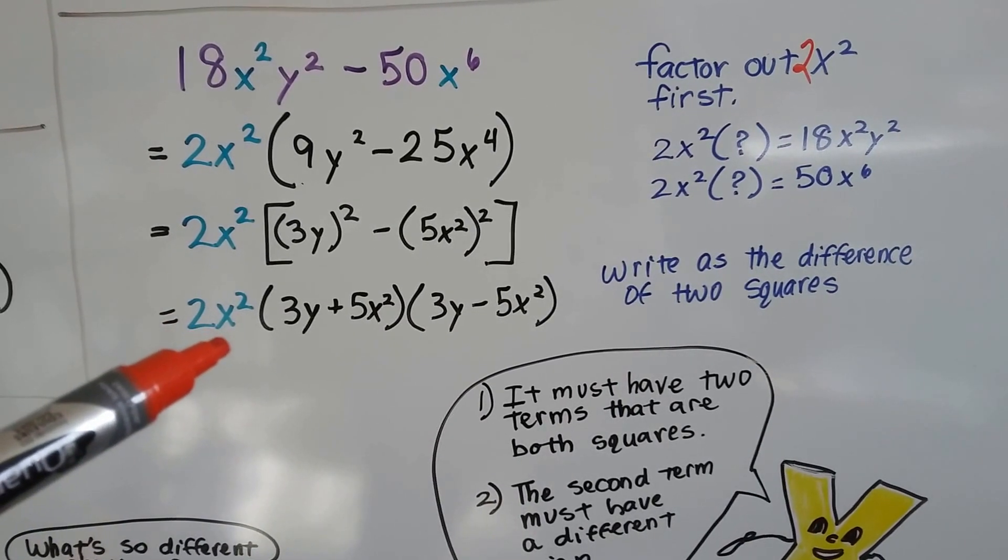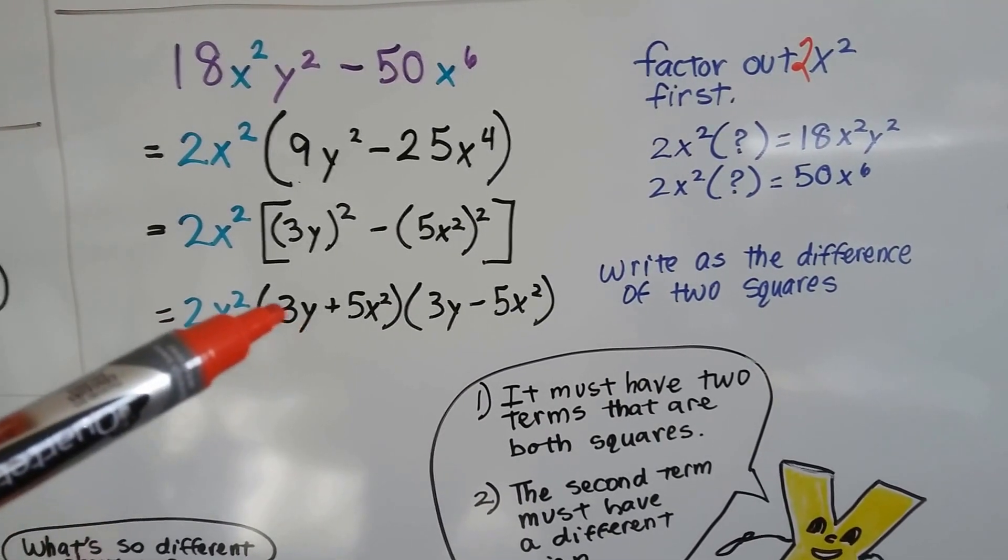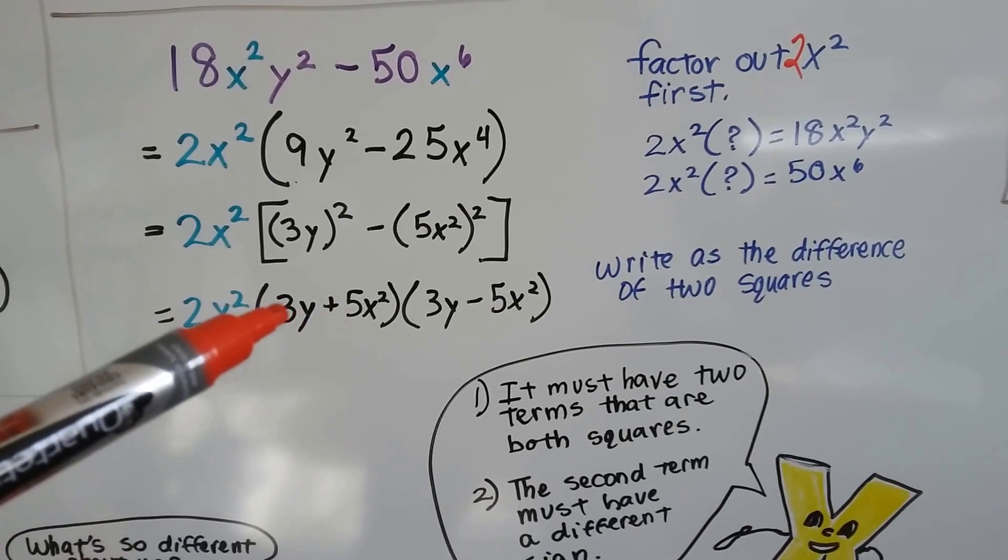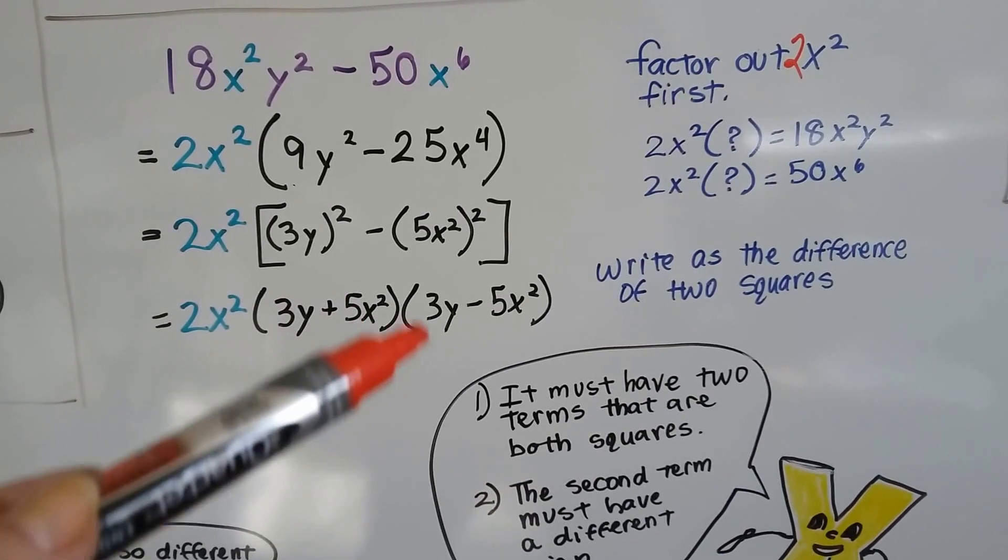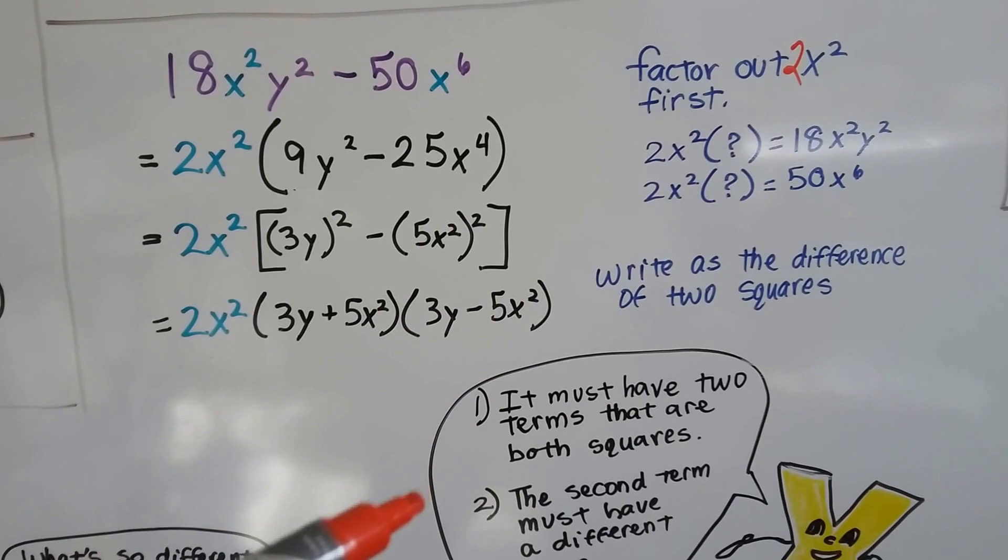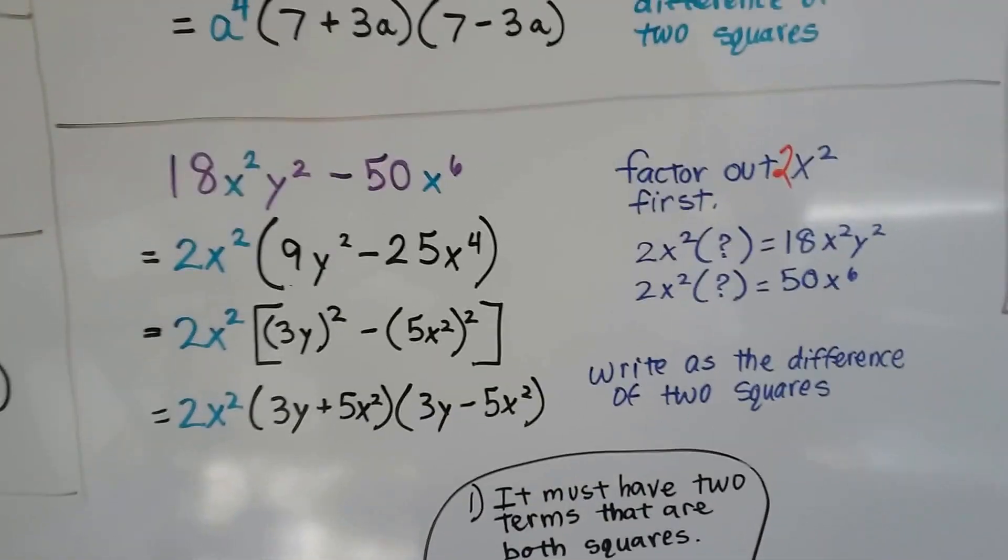So now, we've got 2x² on the outside of the parentheses, and then we've got our sum and difference, (3y+5x²)(3y-5x²). We write as the difference of two squares.